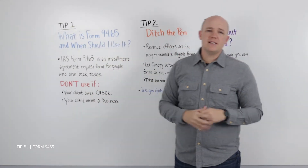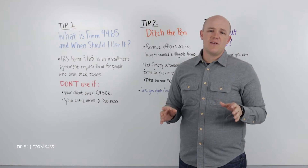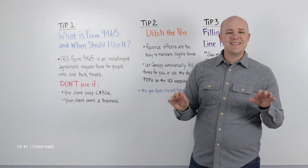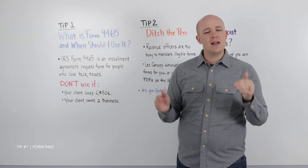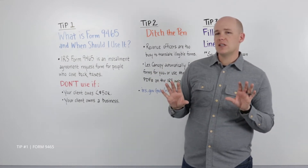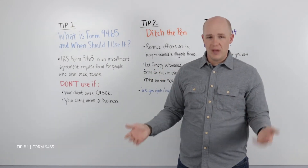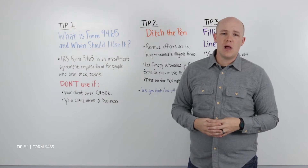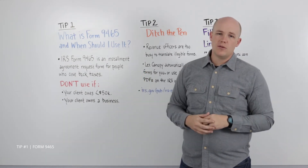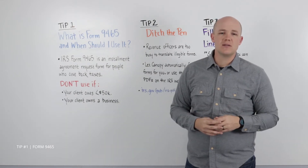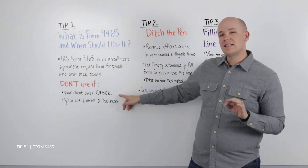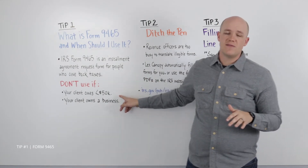Tip number one: what is IRS Form 9465 and when should I use it? IRS Form 9465 is a collections form, meaning it's only useful if your client owes back taxes to the IRS. Specifically, Form 9465 is used when setting up an Installment Agreement on behalf of your client. However, there are several reasons you should not use Form 9465 even when setting up an Installment Agreement. If your client owes less than $50,000, don't use the 9465.